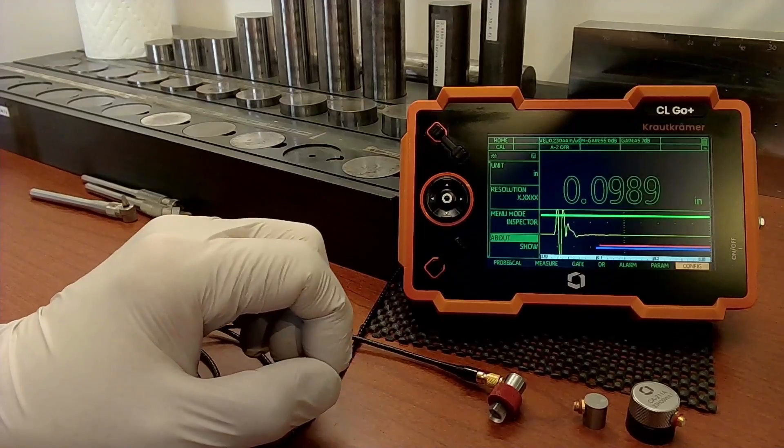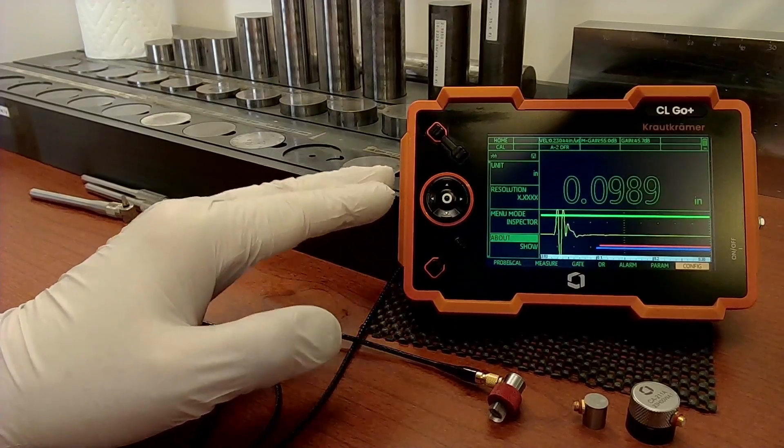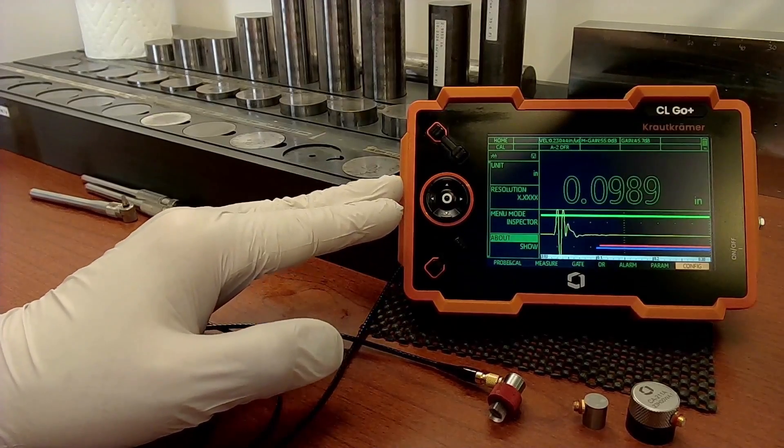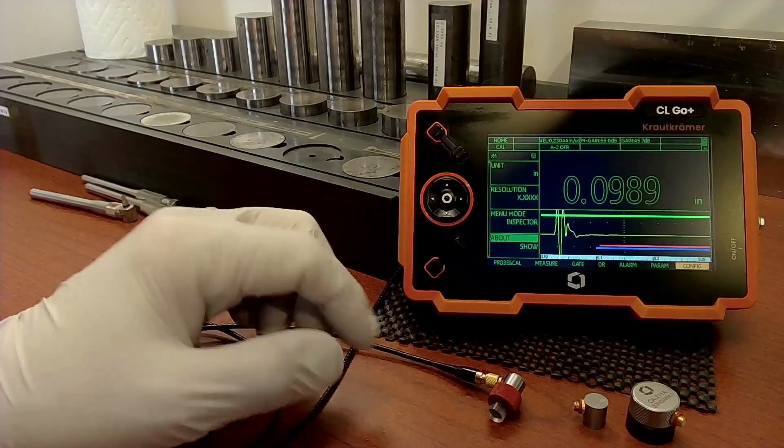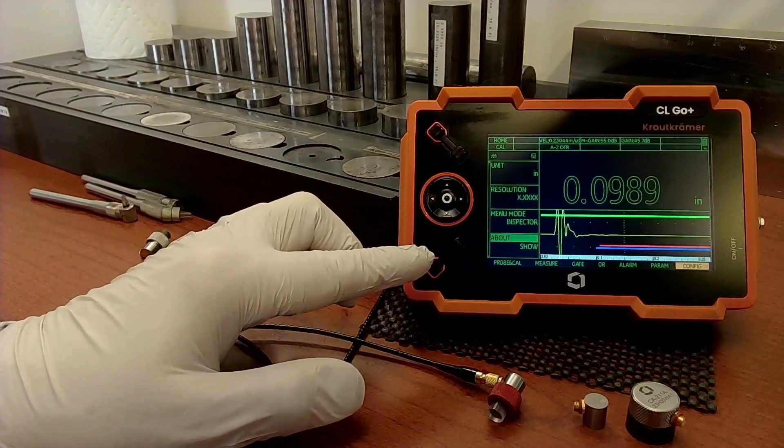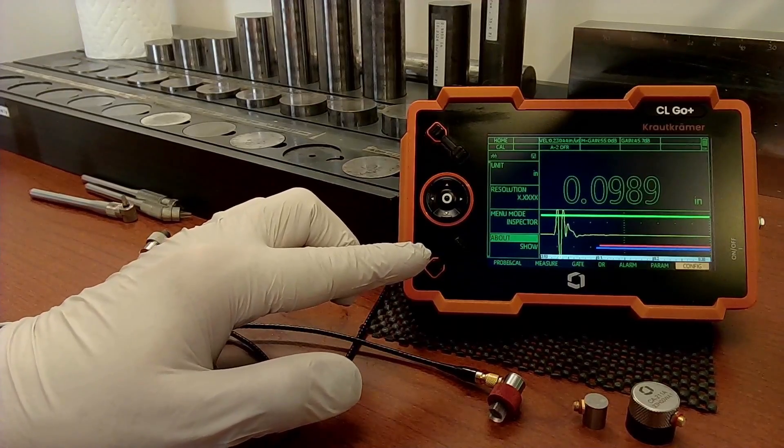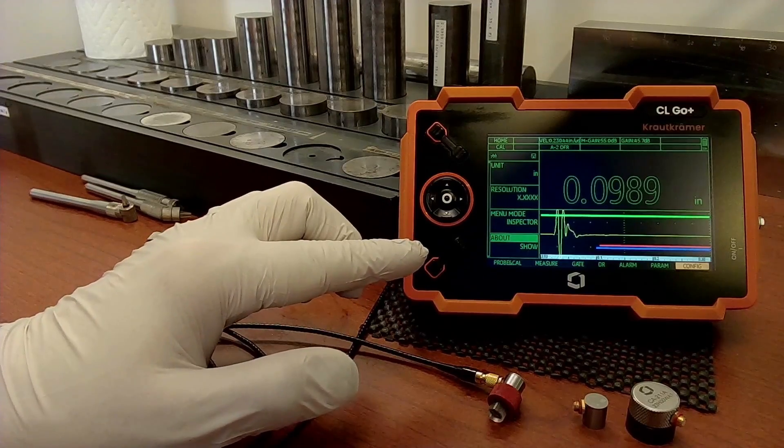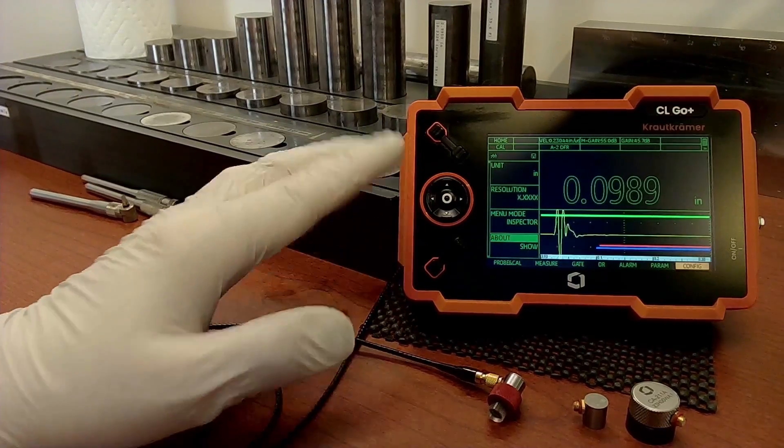To achieve those levels of precision, there are additional digital signal processing techniques that we implement in the GO-PLUS platform. And we also use a different series of probes than we would normally use in a corrosion thickness gauge like the DMS-GO.